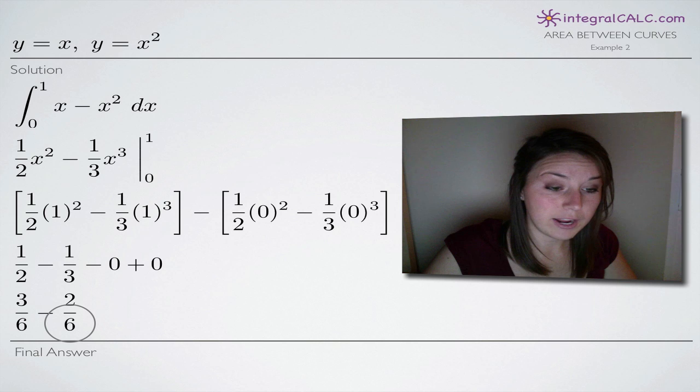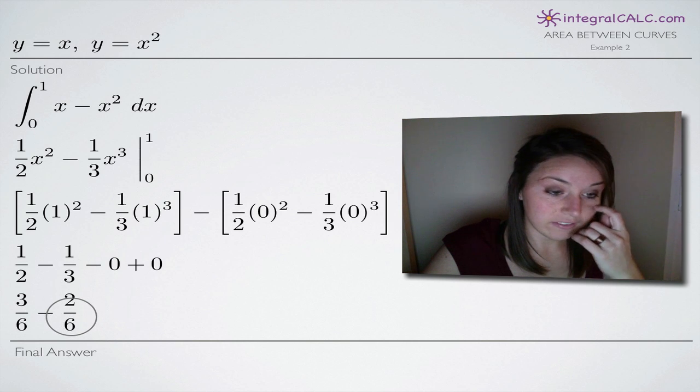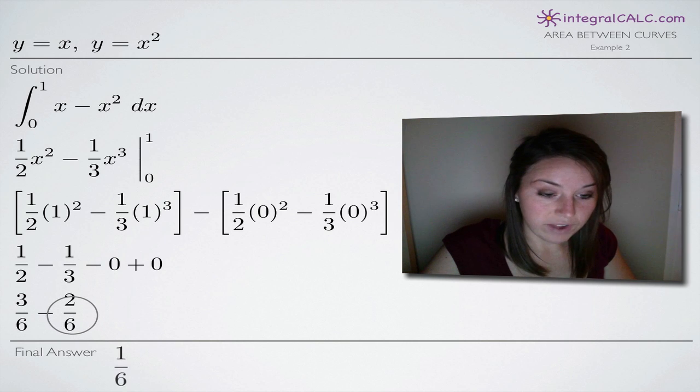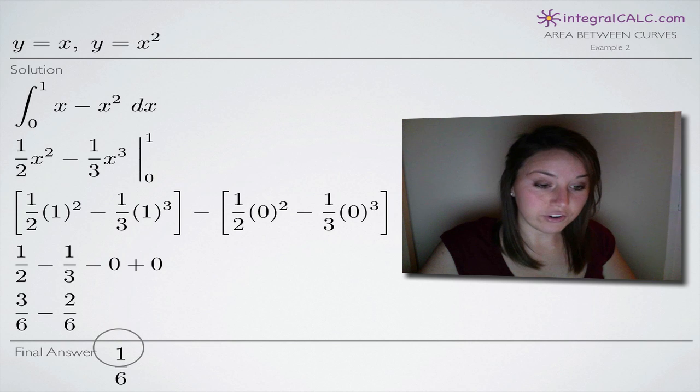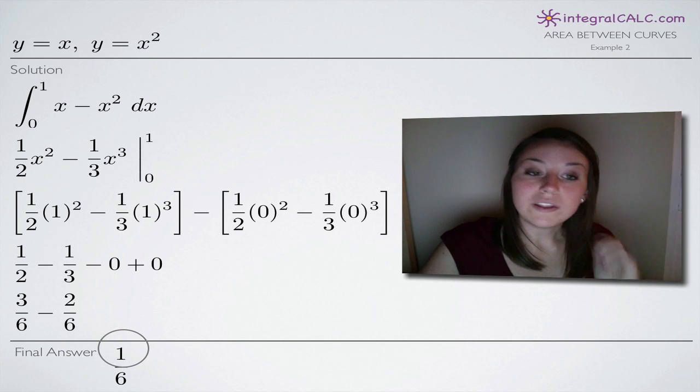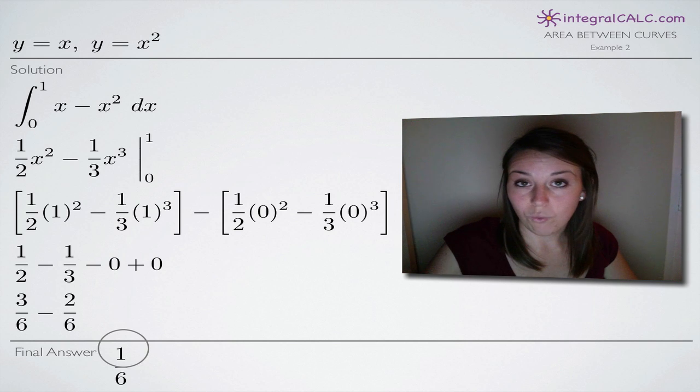If we find the lowest common denominator, which is six, and we modify here our fractions, we'll end up with three-sixths minus two over six. And when we simplify, you can see that our final answer is going to be one-sixth. So one-sixth is the area between those two curves on the range zero to one.